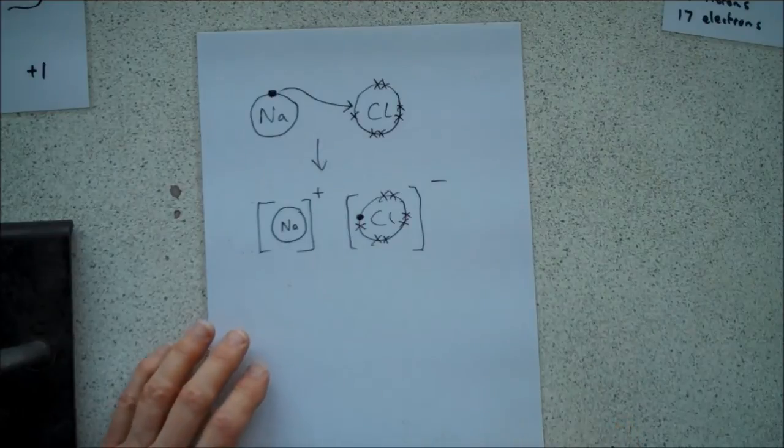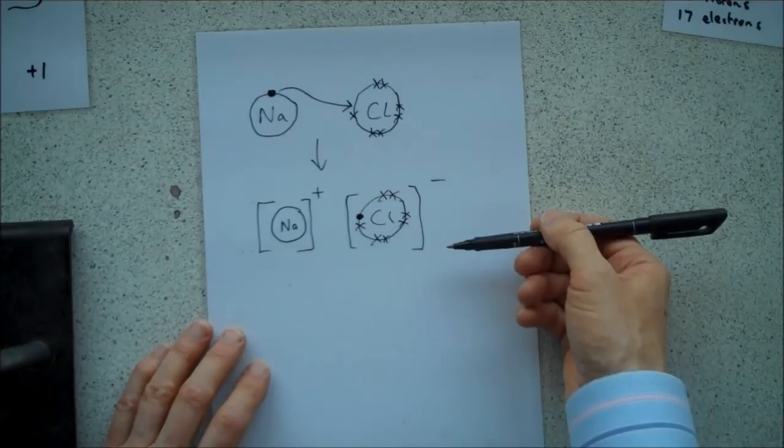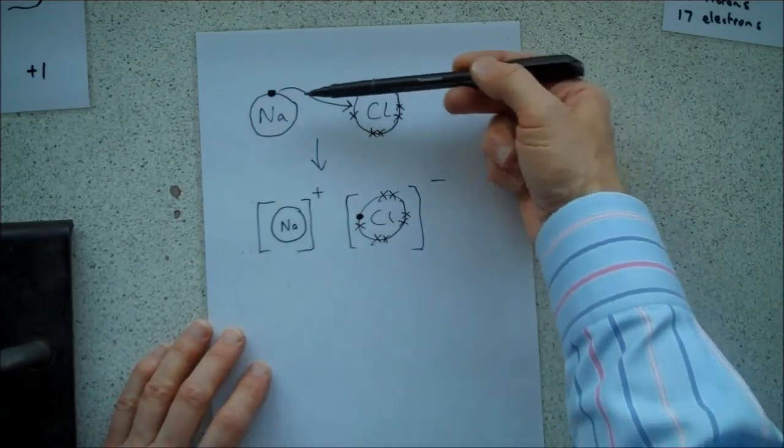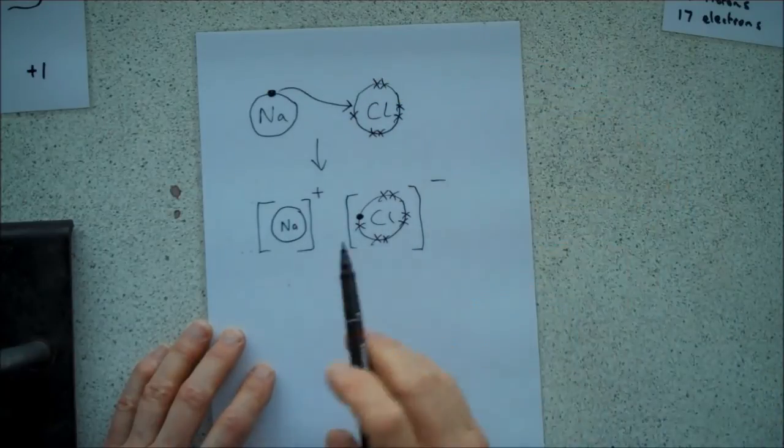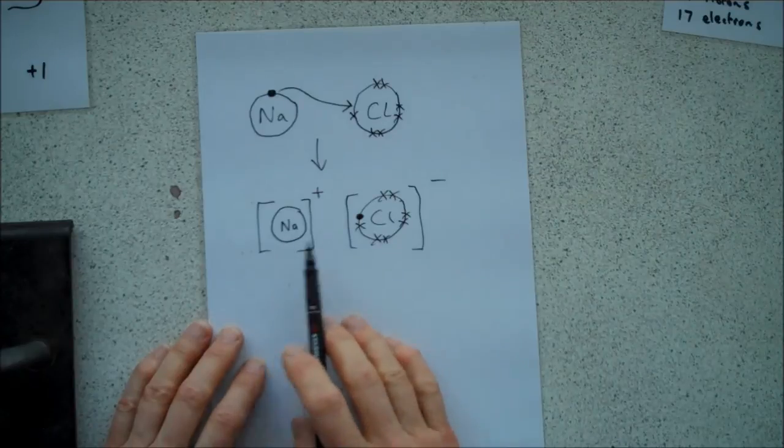So that's ionic bonding, that's all the detail you would need in an AS level or a GCSE exam, probably. And this is not the answer, this is like showing you're working, the answer is that. That is the ionic dot cross diagram for sodium chloride.